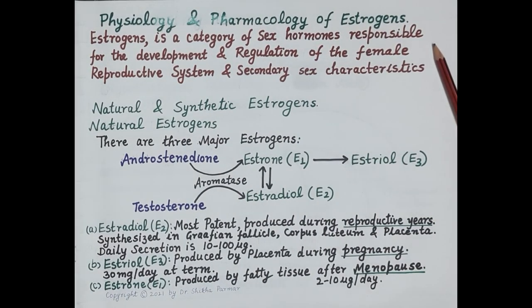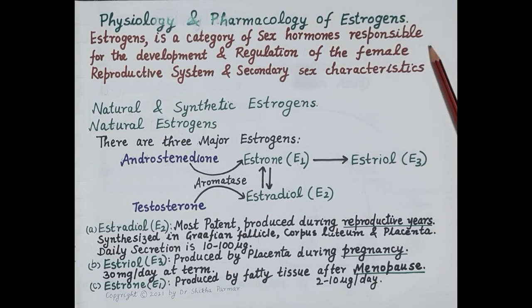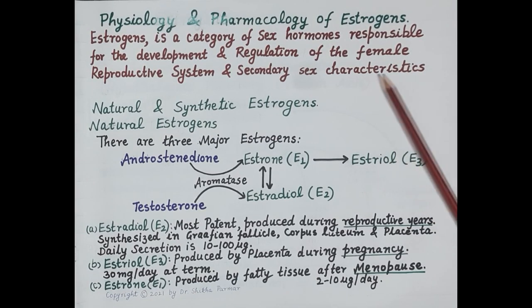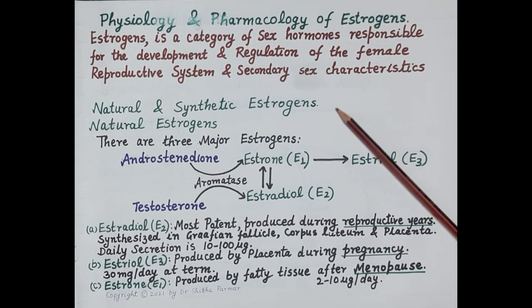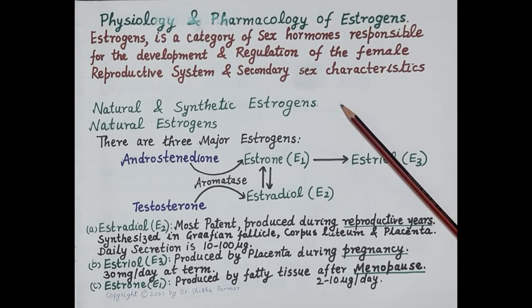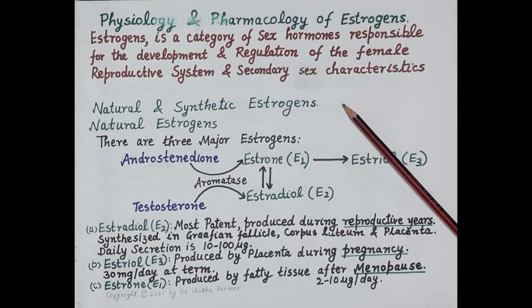Estrogens are a category of steroidal sex hormones responsible for the development and regulation of the female reproductive system and secondary sexual characteristics. Estrogens are naturally produced in the body from cholesterol and can also be synthesized, so estrogens can be natural or synthetic.